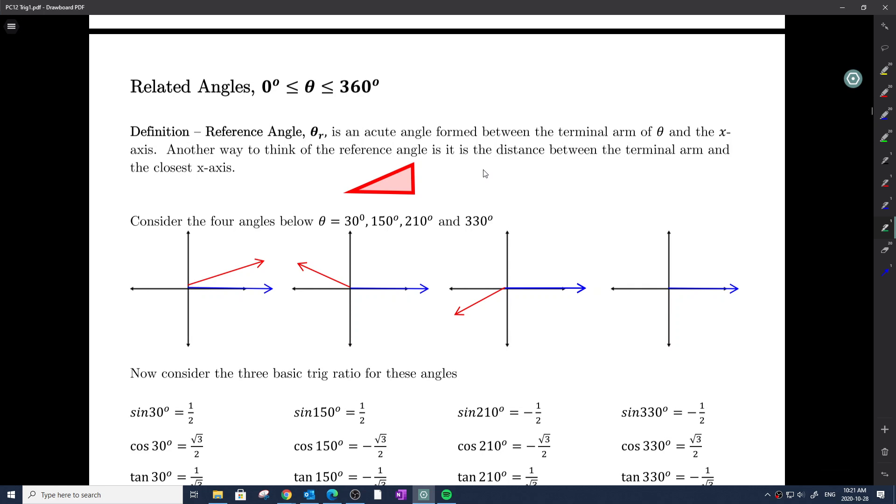All right, so today we're going to take a look at related angles. You may have seen related angles 0 to 180 degrees or 0 to 360. Today we're going to talk about related angles 0 to 360. At the end of this lesson, hopefully you're able to pick out those characteristics.